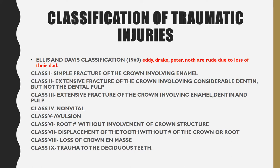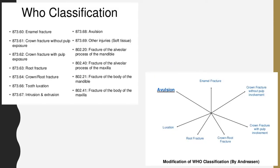Other classifications include the WHO classification, which is very confusing because it has specific numbers to remember. The modification of the WHO classification was given by Andreasen, who classified it as: enamel fracture, crown fracture without pulp involvement, crown fracture with pulp involvement, crown-root fracture, root fracture, luxation, and avulsion.